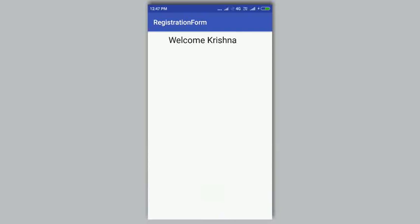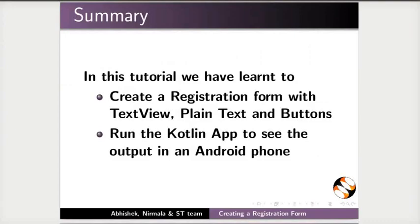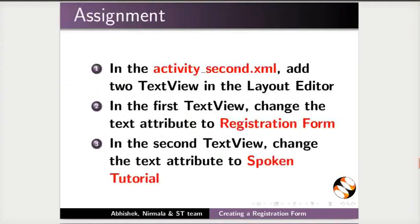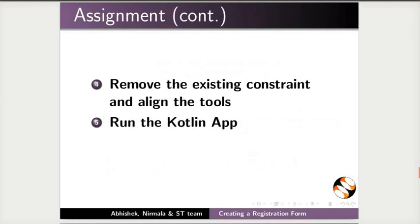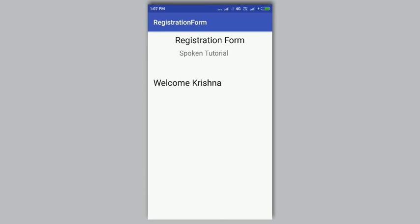This brings us to the end of this tutorial. Let us summarize: we learned to create a registration form with TextView, plain text, and buttons, and to run the Kotlin app to see the output in an Android phone. As an assignment, in activity_second.xml, add two TextViews — change the first TextView's text attribute to 'Registration Form' and the second to 'Spoken Tutorial'. Remove existing constraints, align the tools, and run the Kotlin app. Your app should show the output as demonstrated.